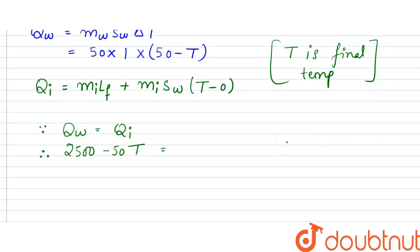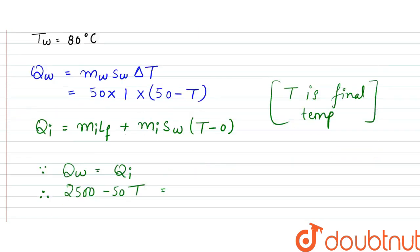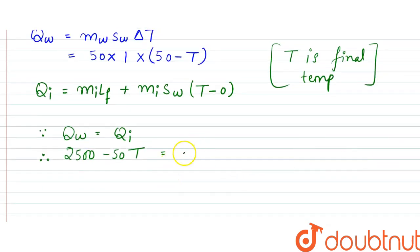Since Qi, that would be equal to mi is 50, 50 into 80, so it is 4000, plus mass 50 into 1 into T. So as we can see from here, this heat loss is less than the amount of heat required by the ice.